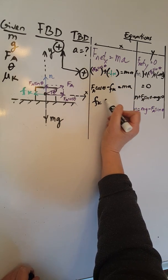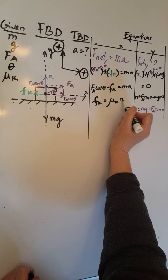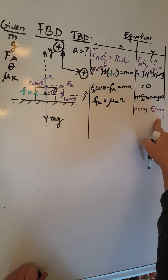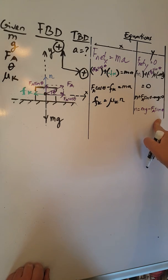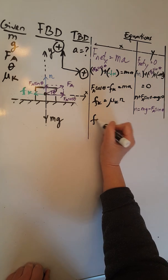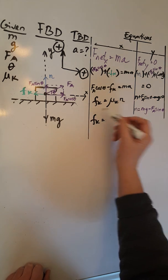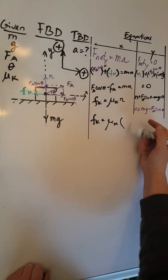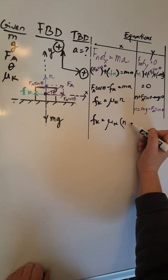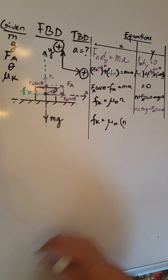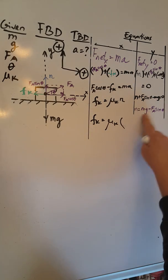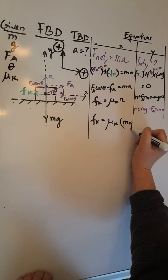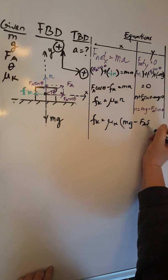We do know that FK equals mu K times N, and we do know that N equals Mg minus FA sine theta. So therefore, FK is going to be mu K times this expression: Mg minus FA sine theta.